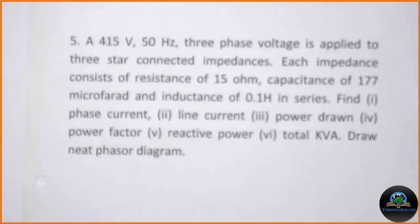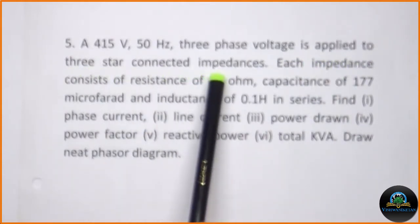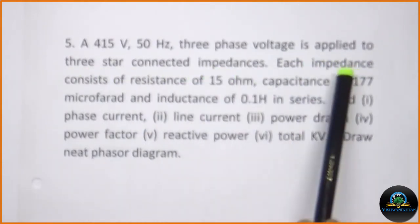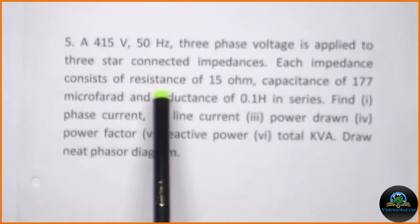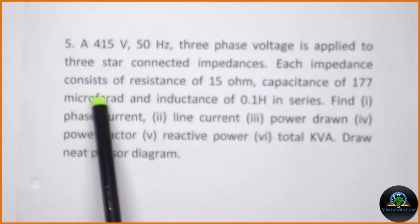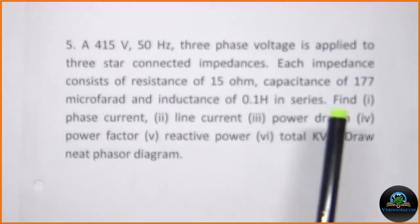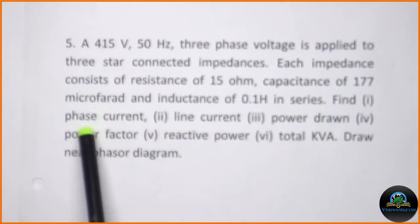Hi friends, I am Sharwari Sani from the electrical department. Today we are going to solve a problem based on three-phase supply. A 415 volt, 50 hertz three-phase voltage is applied to three star-connected impedances. Each impedance consists of a resistance of 15 ohm, capacitance of 177 microfarad, and inductance of 0.1 henry in series.